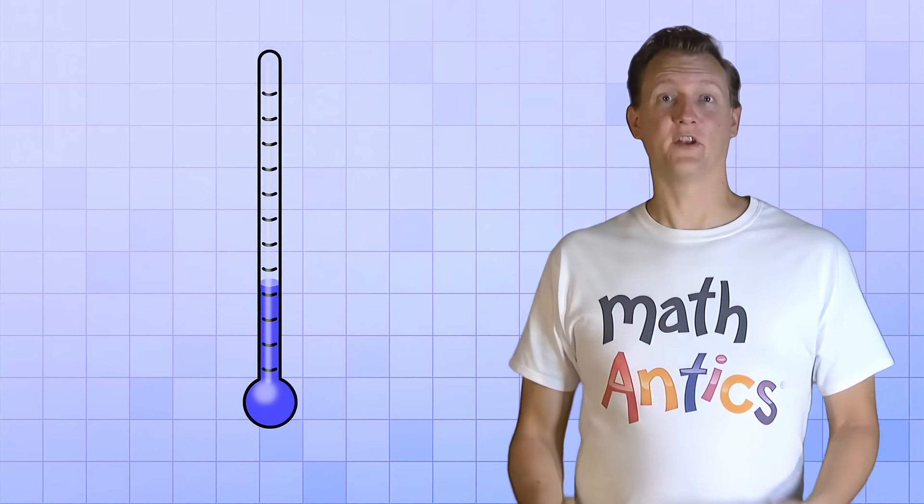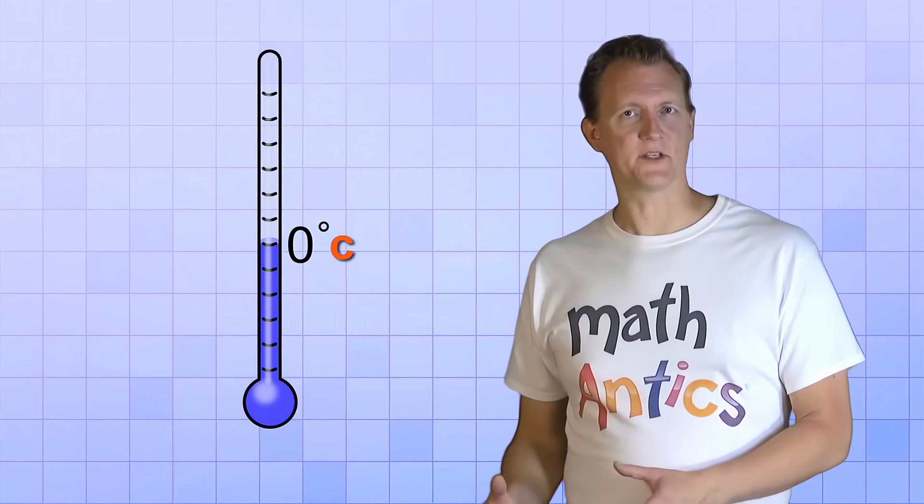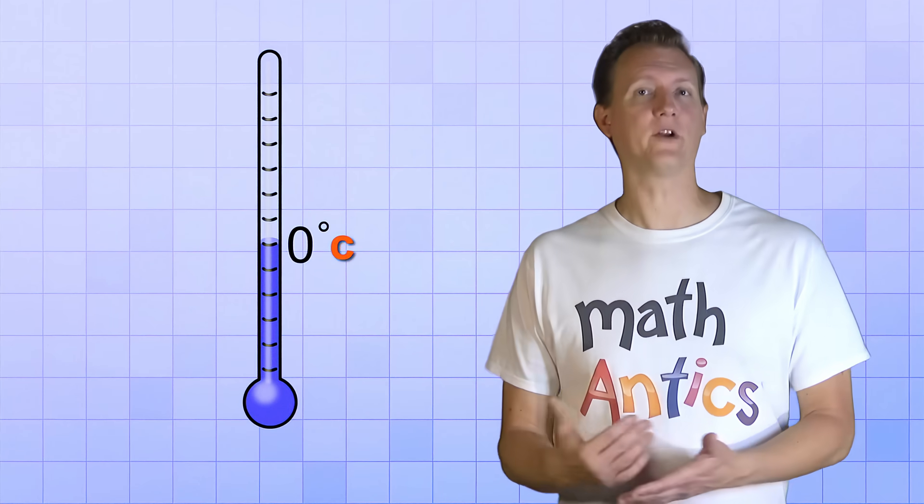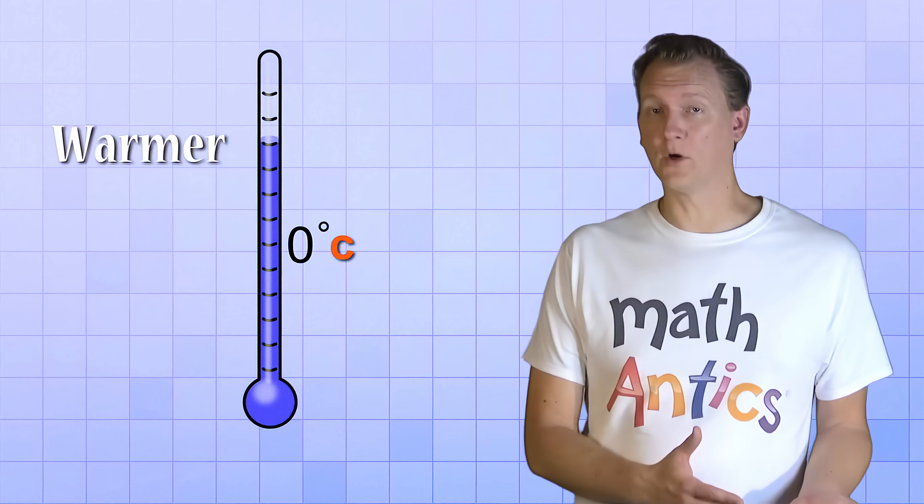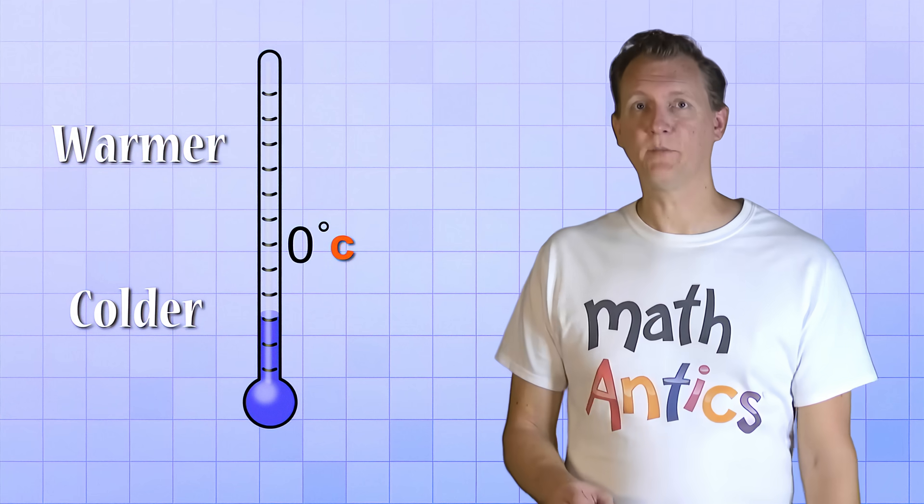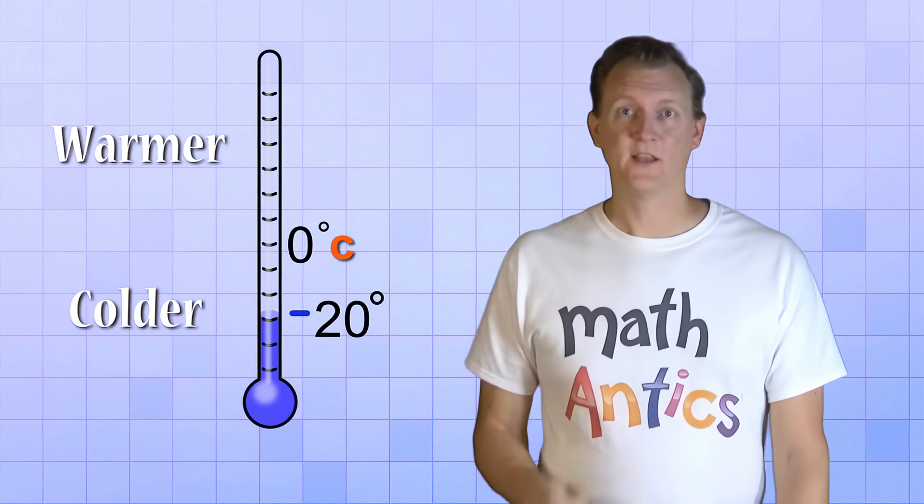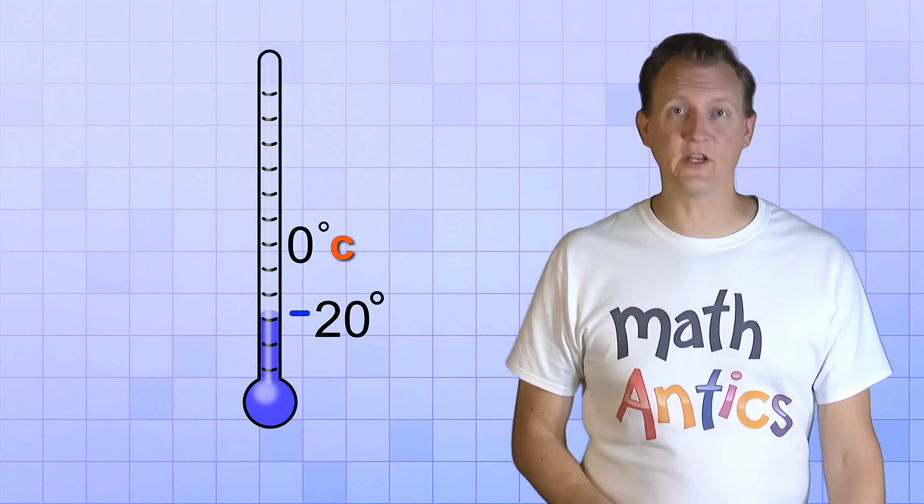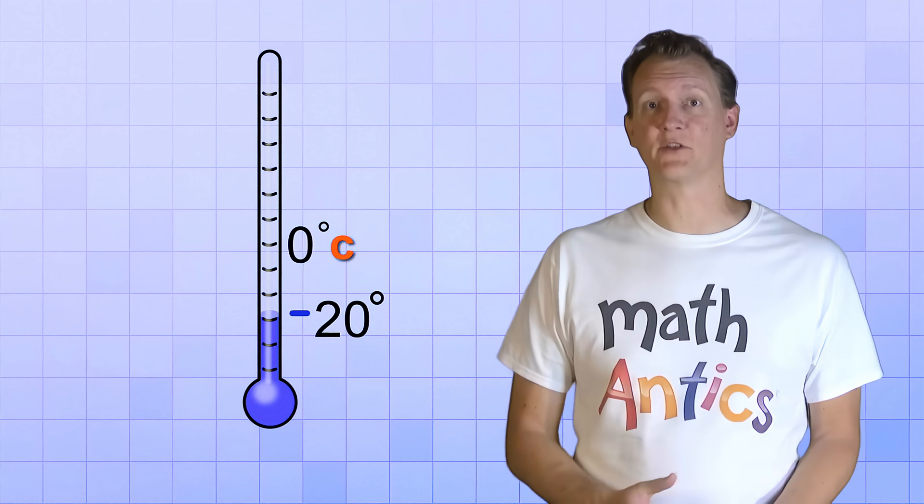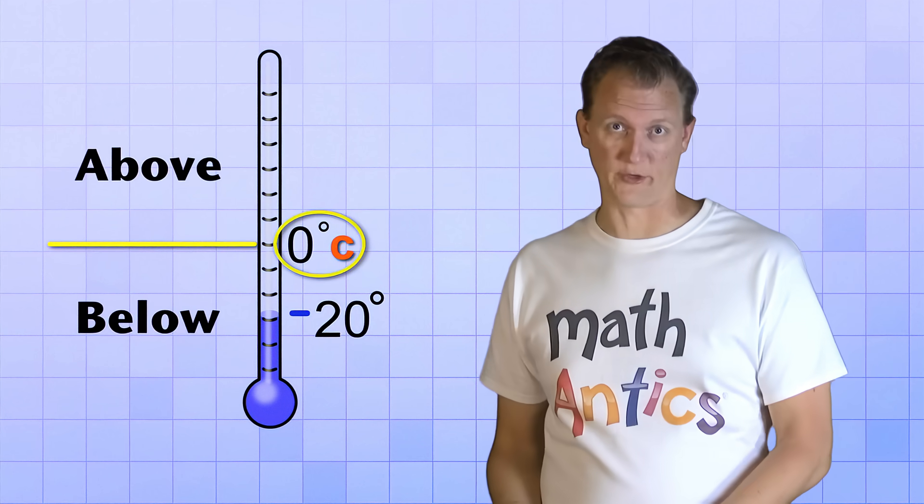And temperature is another great example. We use 0 degrees Celsius to describe the temperature for water to freeze, but it can be warmer or colder than that. The temperature could be negative, like negative 20 degrees. So negative numbers are very useful in the real world to help describe things that can be above or below zero.